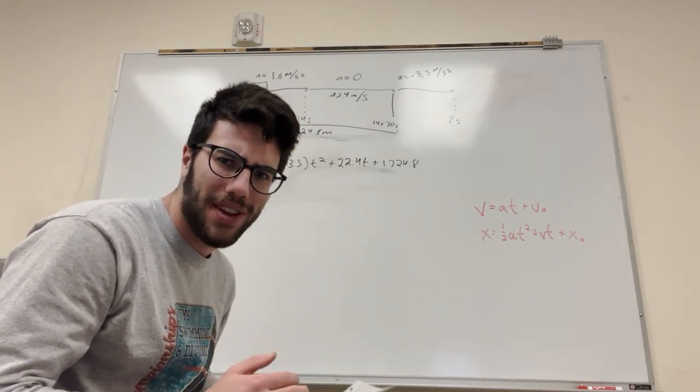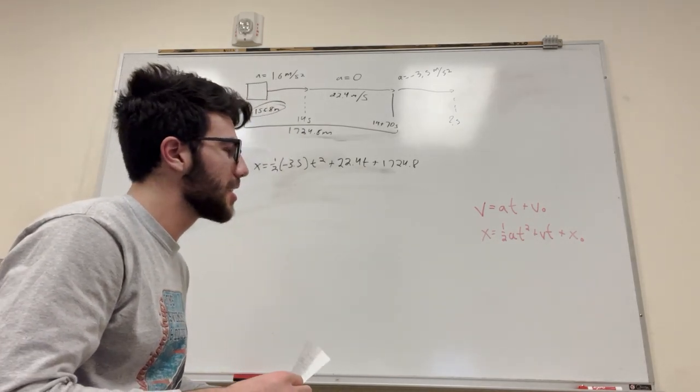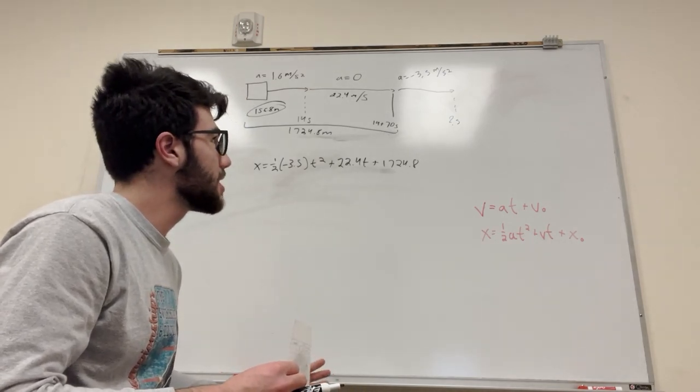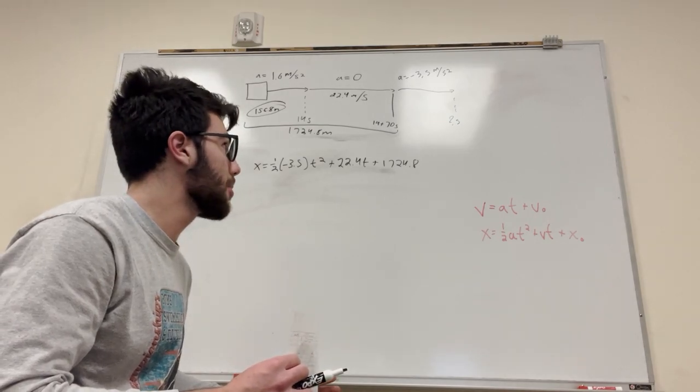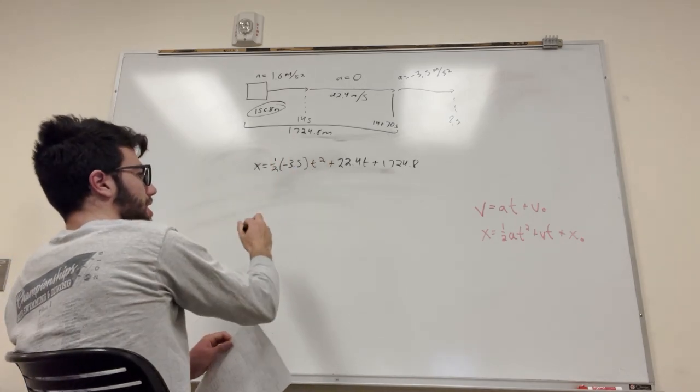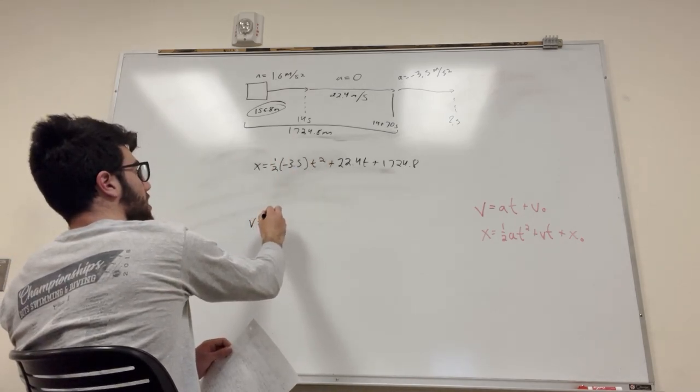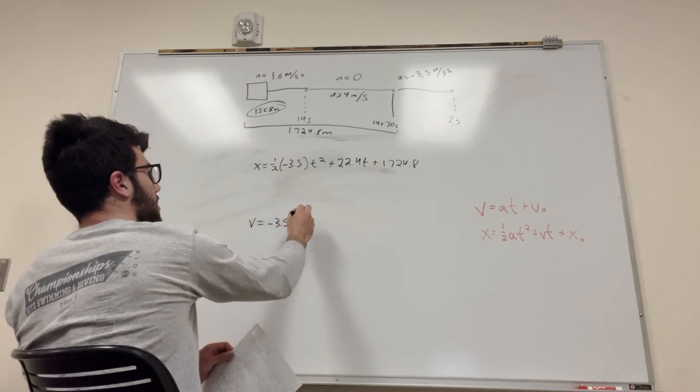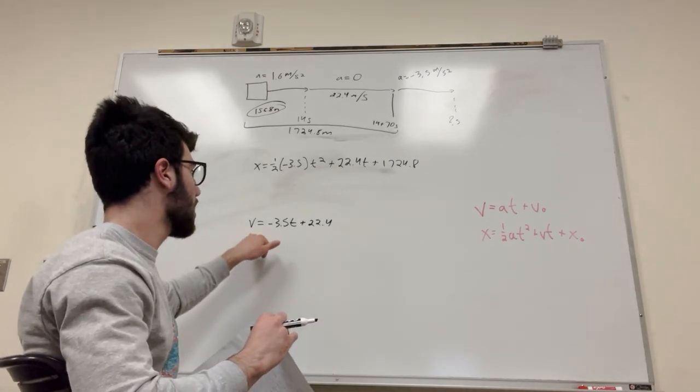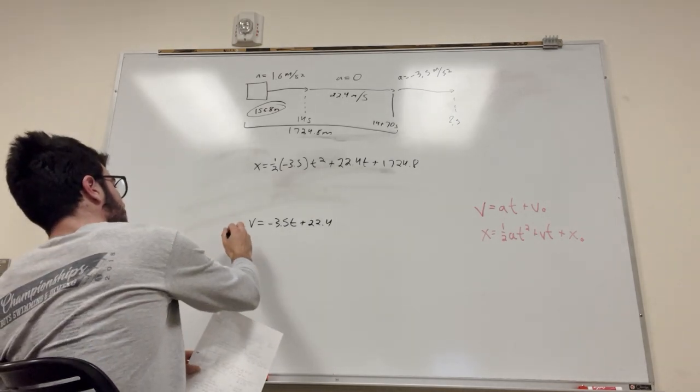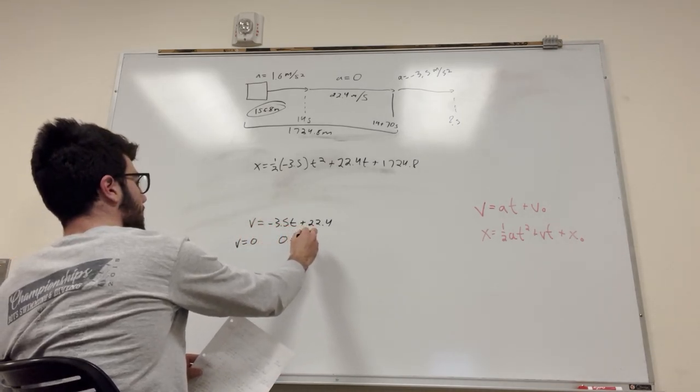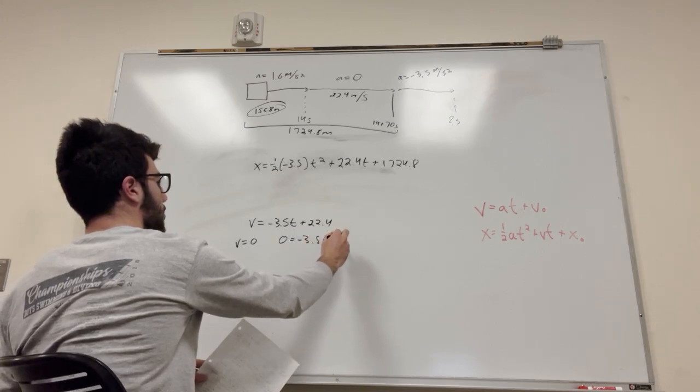And then plus our initial distance, which is 1724.8 meters. Okay. What do we do here? Well, it's kind of confusing. But what we need to know is when our velocity is equal to zero. Like, how do we find a stop? And we define a stop as when our velocity is equal to zero. And we need to know what t value equates to our velocity being equal to zero. So, let's find out. Let's write our velocity equation. We'll come back to this equation later. So, our velocity is equal to acceleration, negative 3.5 t, plus our initial velocity. And then if we're trying to find what time our velocity equals to zero, simply put your velocity equal to zero. So, v is equal to zero. And then so it'll be zero is equal to negative 3.5 t plus 22.4.